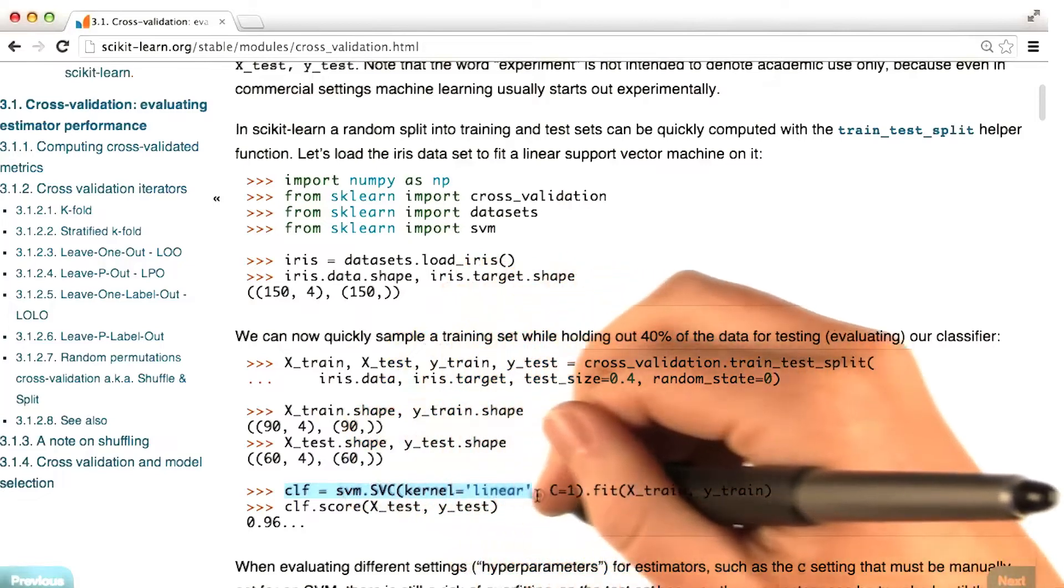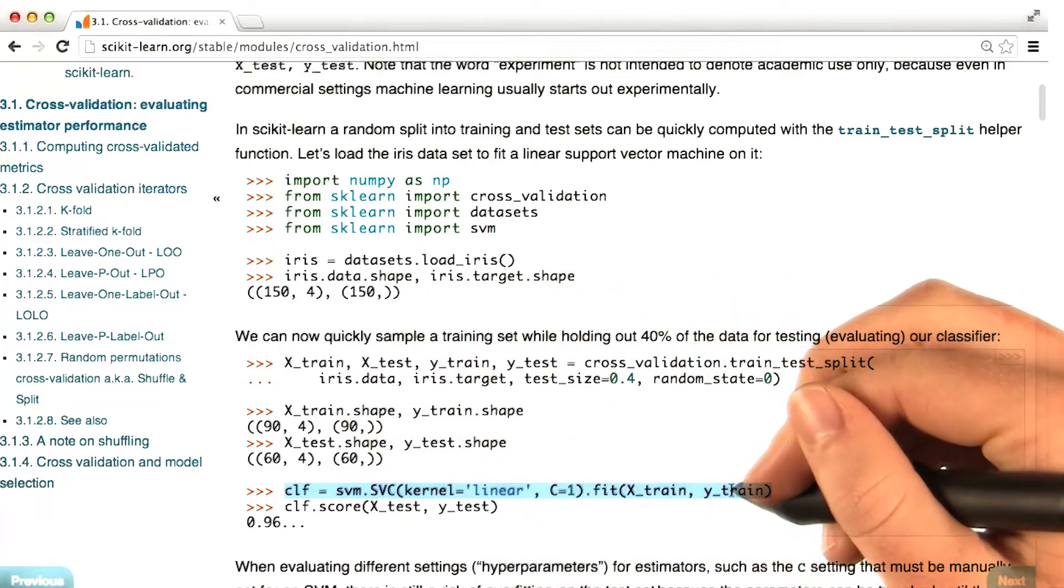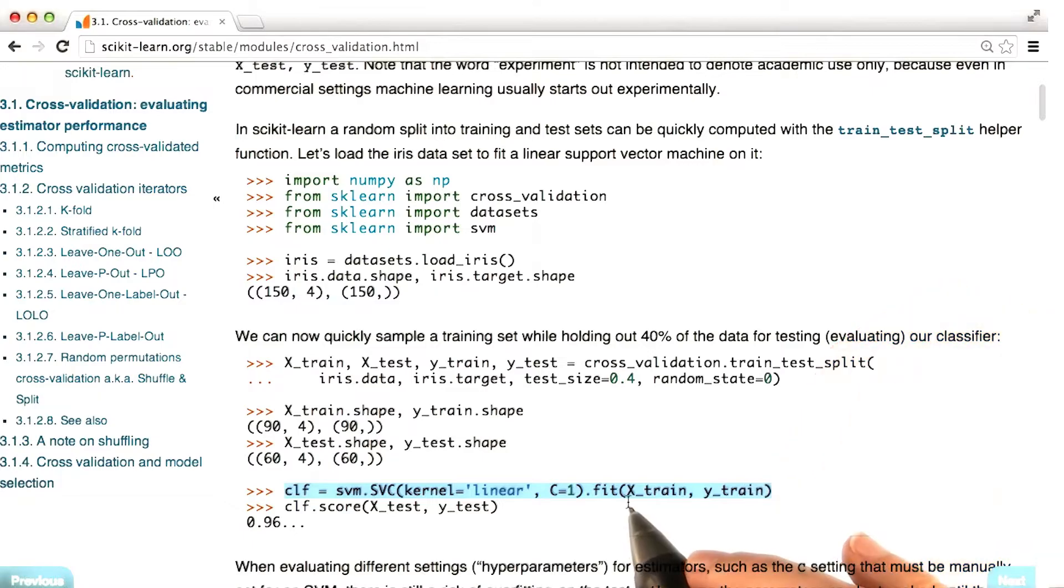And then down here you can see that there's actually an SVM that's now being trained on the training data, the features and the labels, or as they call it, X-train and Y-train. And then we can do an evaluation on the test set. So this is looking at something called the score of the classifier. This is sort of related to the accuracy. So this is something that you want to be evaluating on your test data.